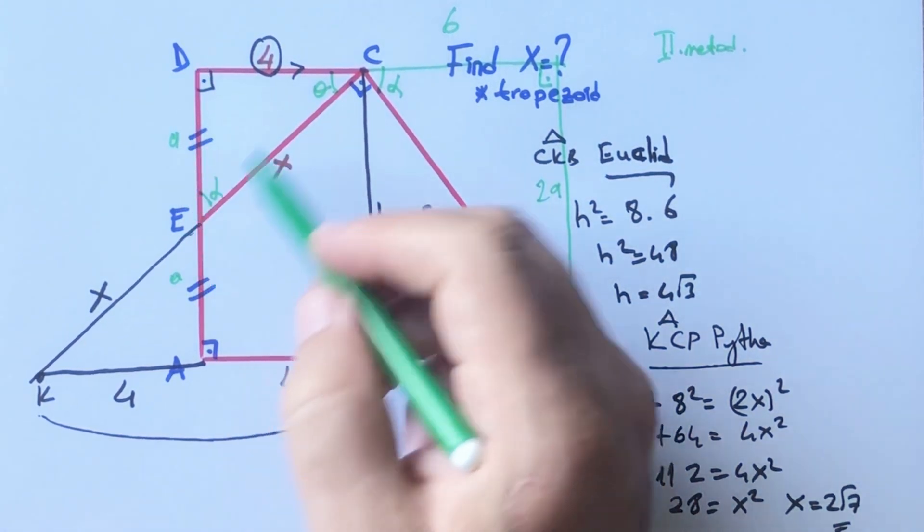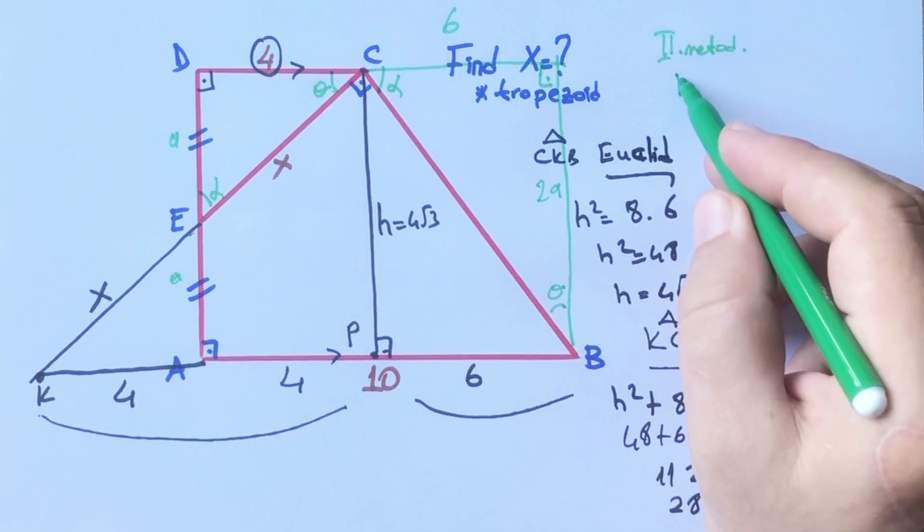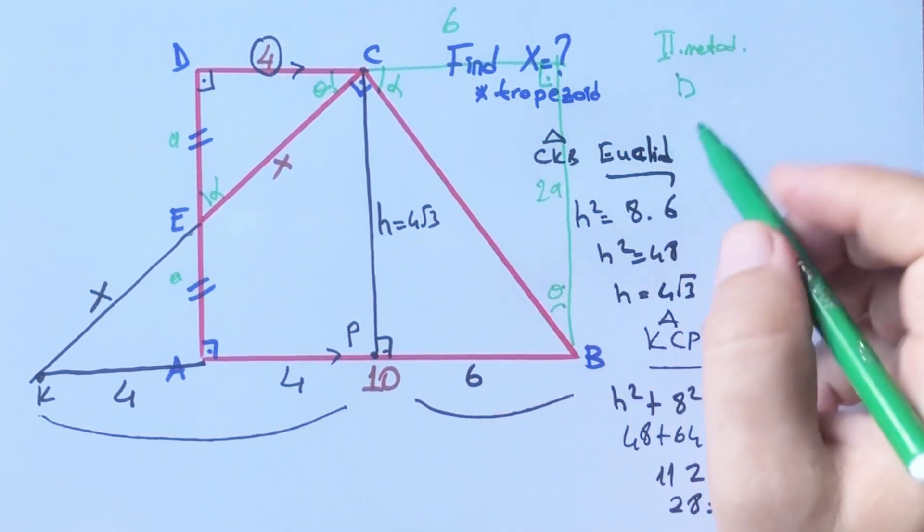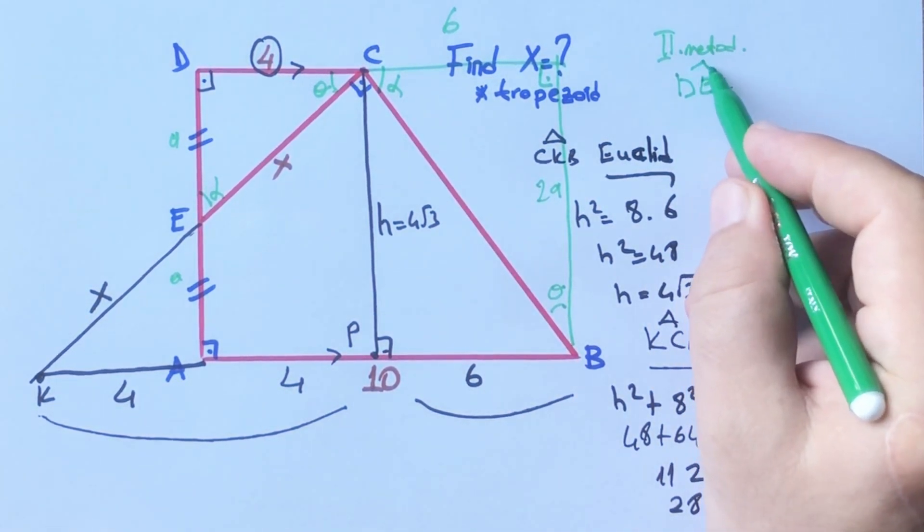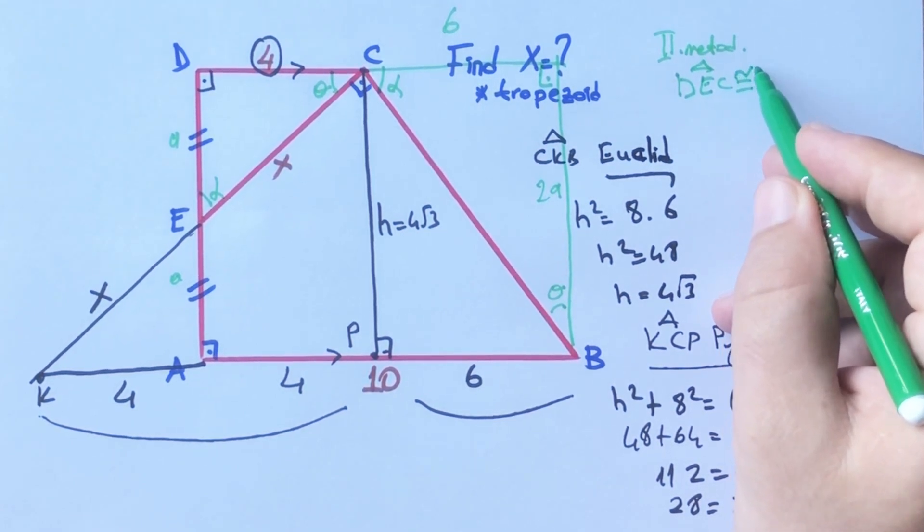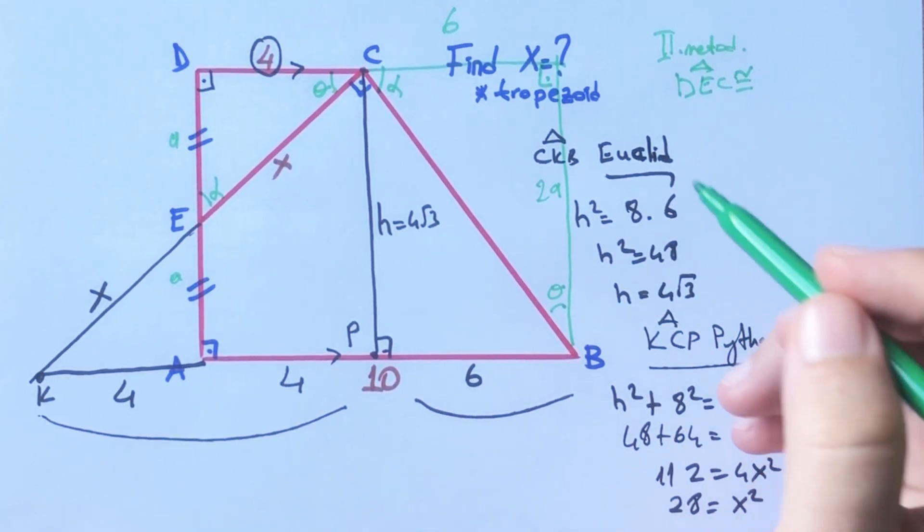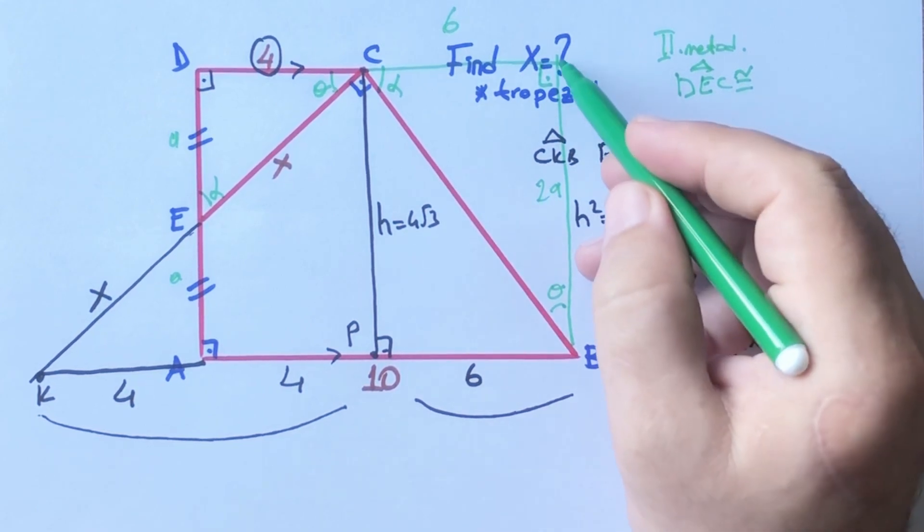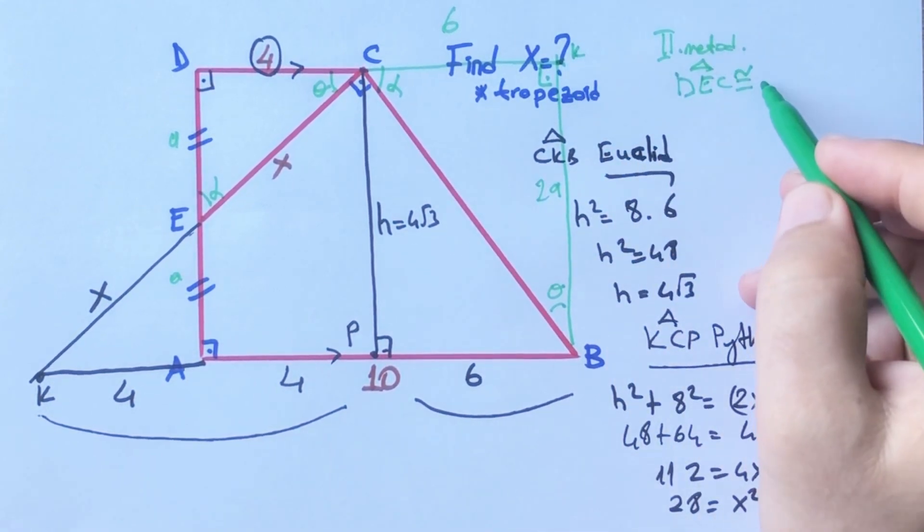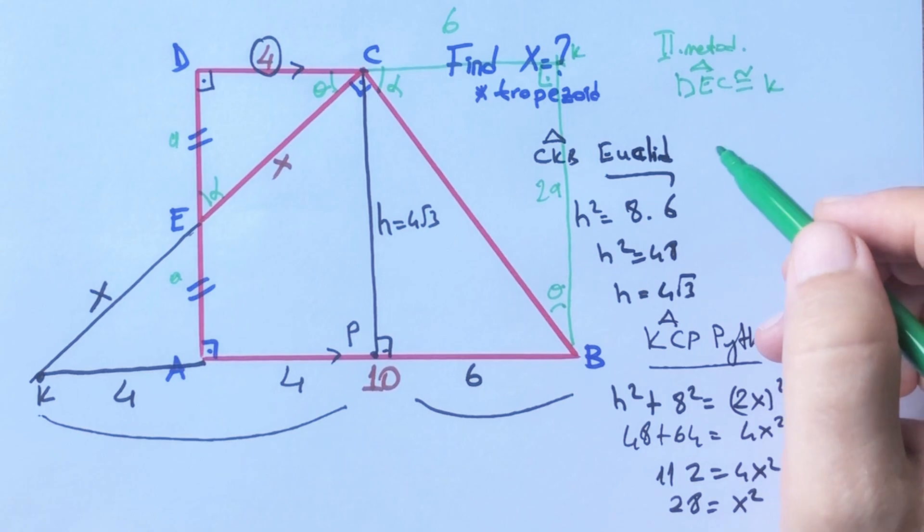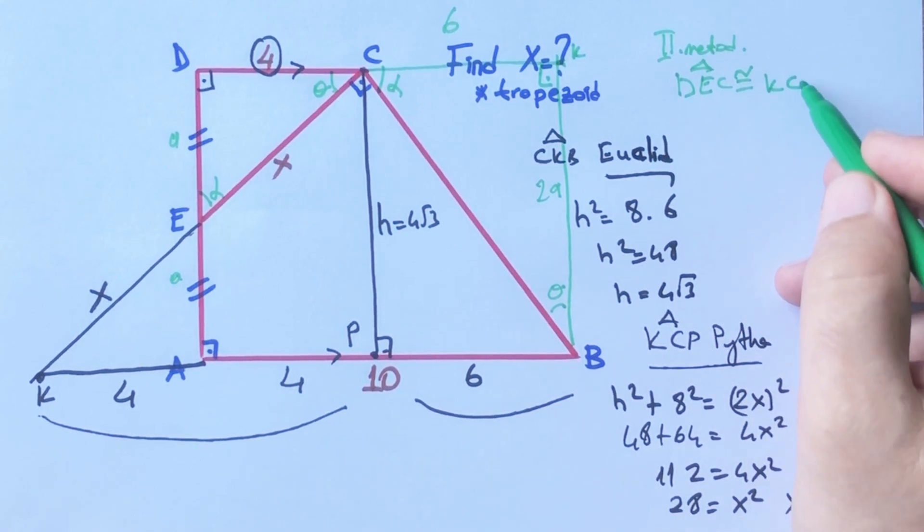If you notice that we get two similar triangles. Triangle TEC and triangle KCB are similar.